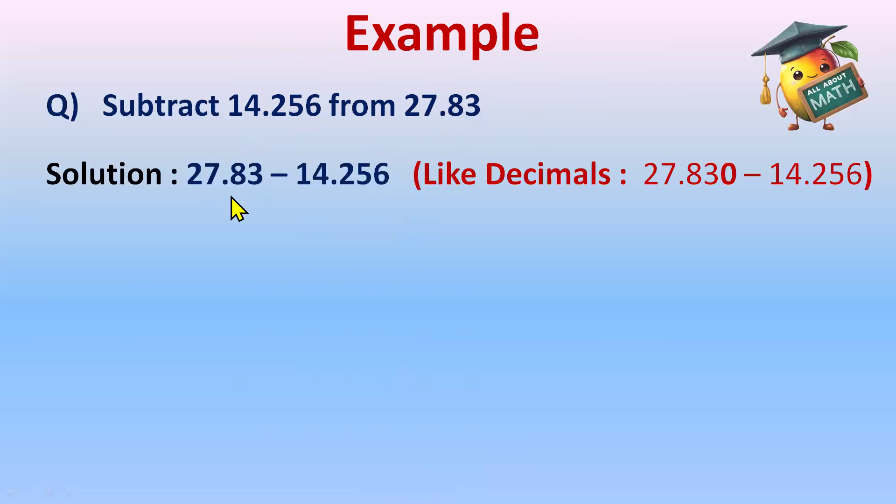I have written 27.83 first, then minus 14.256. Because of this 'from'. From means second term minus first term. First I'll write this second decimal number. So 27.83 minus 14.256.